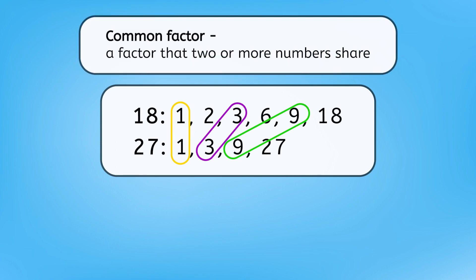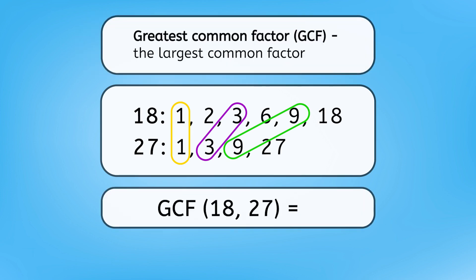A common factor is a factor that 2 or more numbers share. We need to put as many animals as possible in each pen, so what we really need is their greatest common factor. Greatest common factor, or GCF for short, is the largest of the common factors. If the common factors of 18 and 27 are 1, 3, and 9, then the greatest common factor is 9. 9 is the largest number that can divide into both 18 and 27.